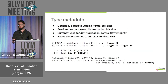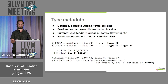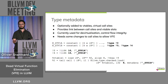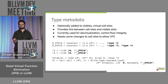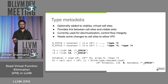LLVM has something that could help us here: type metadata. This is optional metadata added to virtual tables, along with intrinsics and metadata added to call sites, which allow us to reconstruct the link between call sites and the targets they could end up at. You can see the two constants are the V-tables which have this type metadata on them. A virtual function call has a normal load to get the V-table address out of the object, and then a type-checked load intrinsic to load the virtual function pointer from the table rather than a normal load.